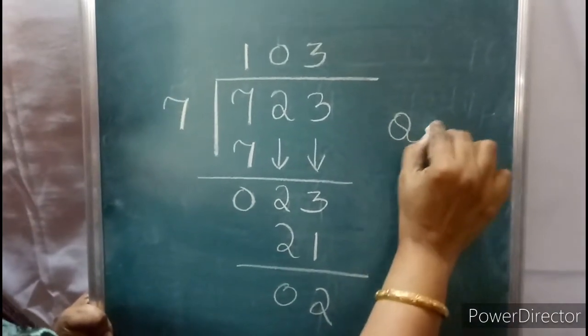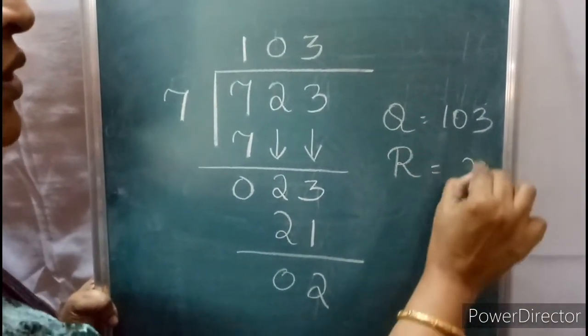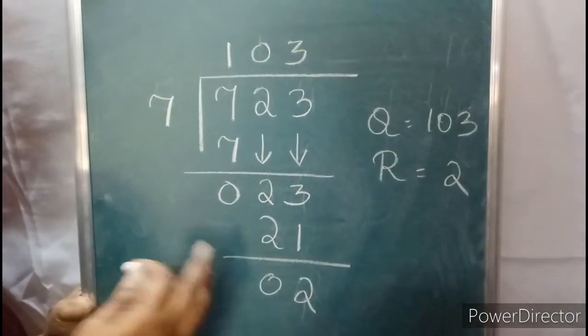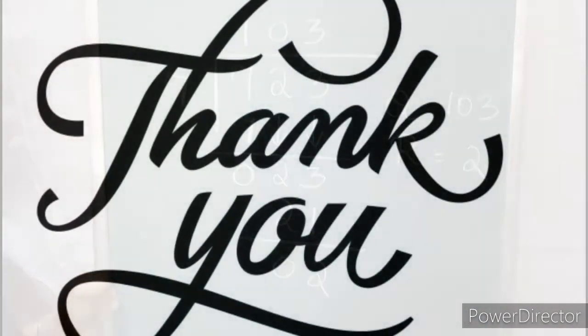Therefore, quotient equals 103 and remainder equals 2. This is how to divide 3 digits by 1 digit and find the remainder. Thank you.